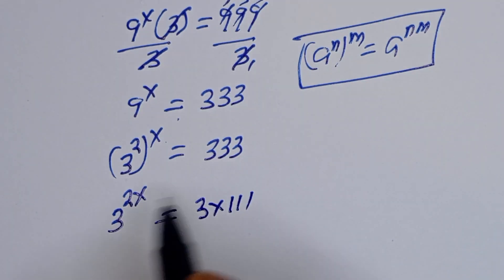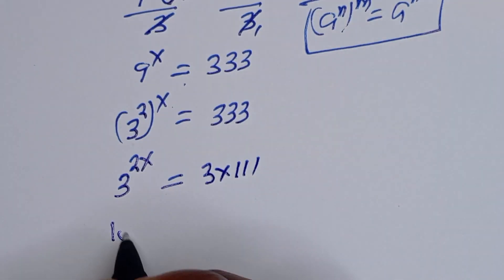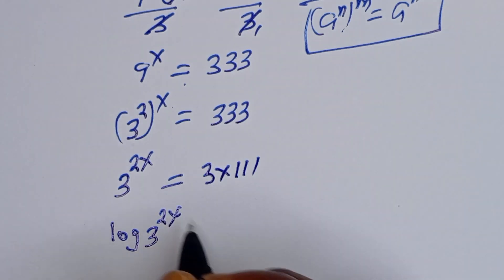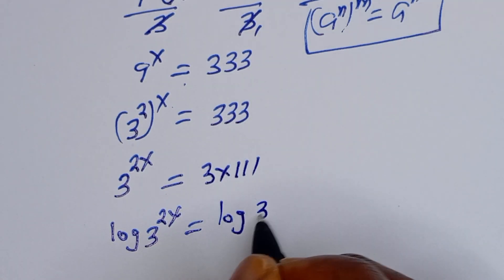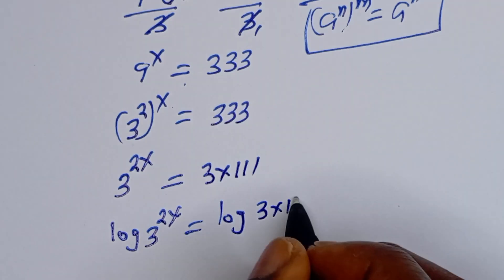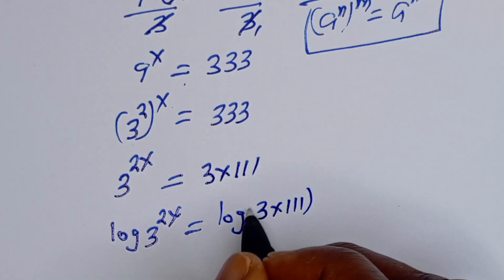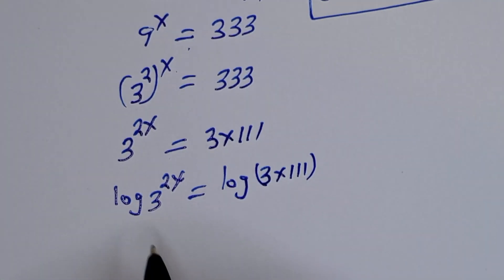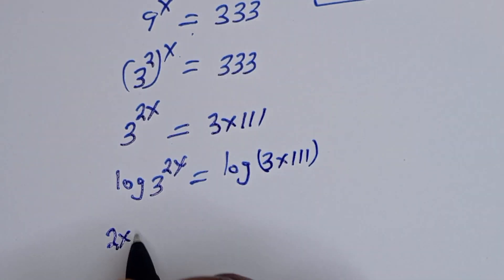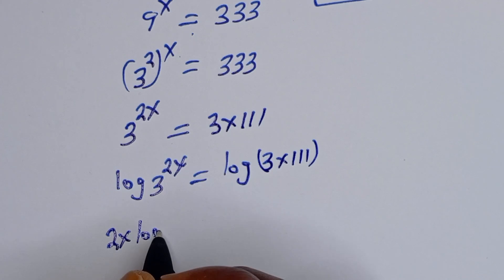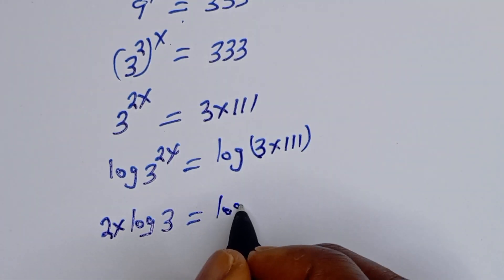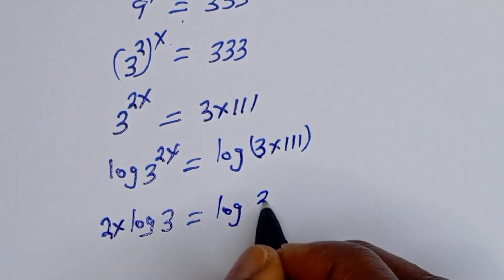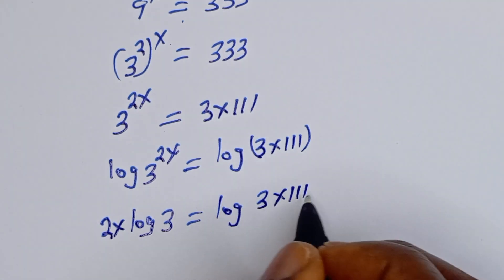Now 333 can be written as 3 multiplied by 111. Let's take the log of both sides. We have log of 3 to the power of 2S is equal to log of 3 multiplied by 111. Then this gives us 2S times log 3 is equal to log of 3 times 111.